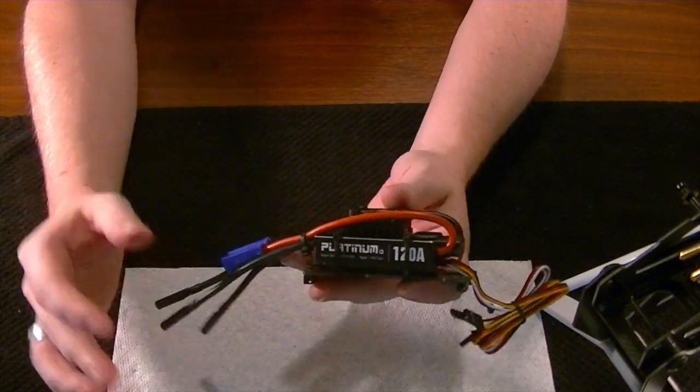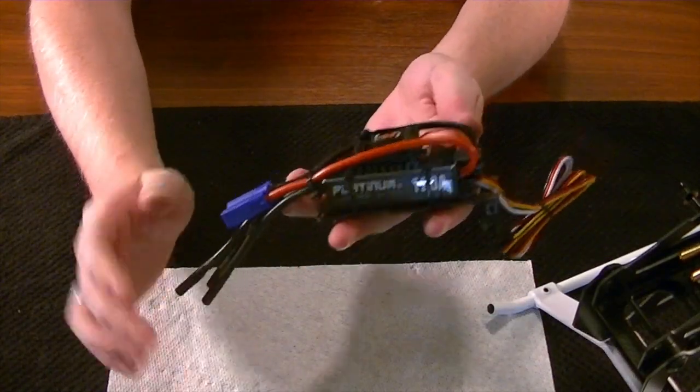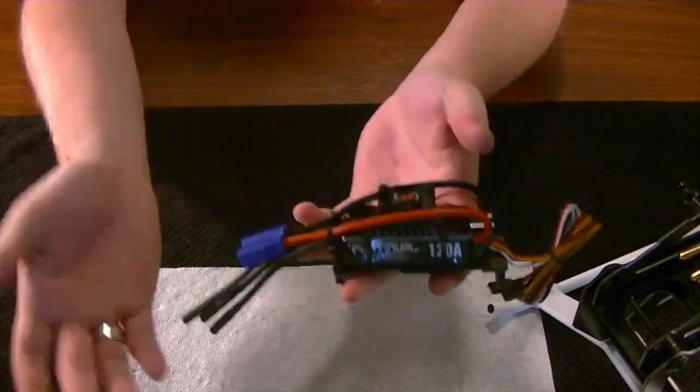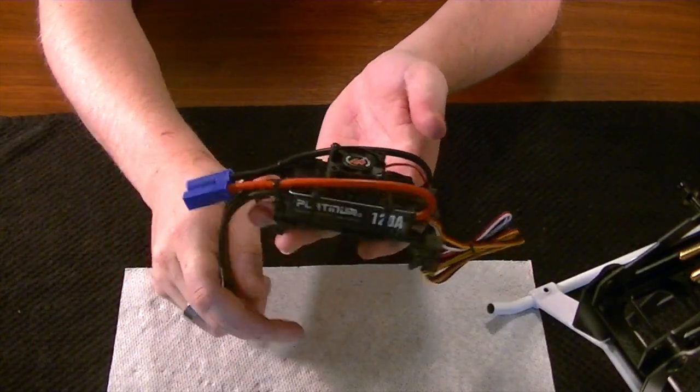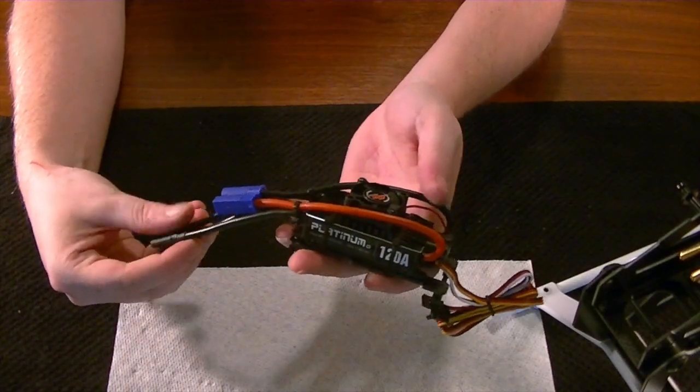In some cases, I don't want to speak for any products in particular, but if your ESC comes unsoldered and your motor is soldered, you could do the opposite. If they're both unsoldered, then you've got a little bit more wiggle room to choose which wires to take from.